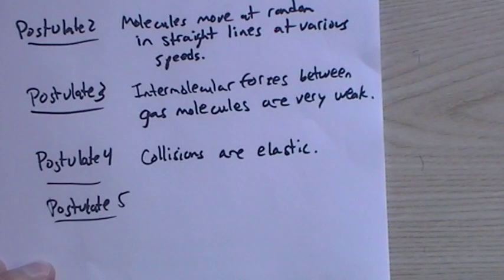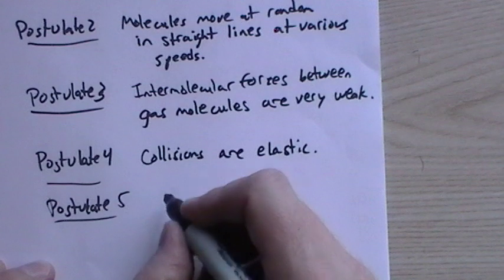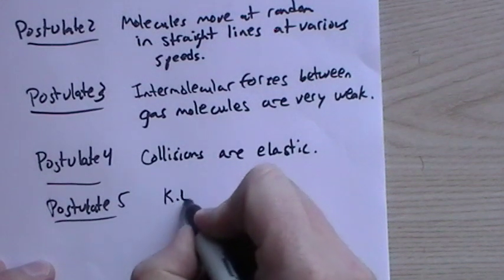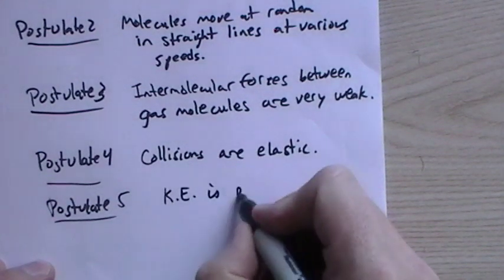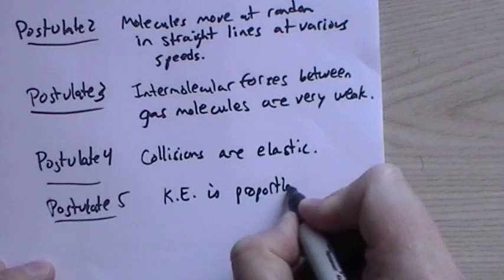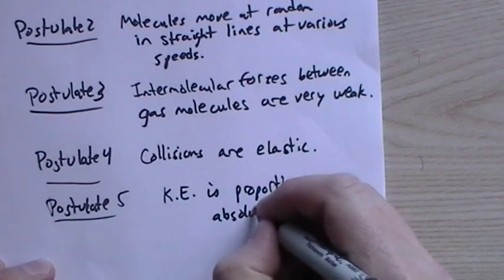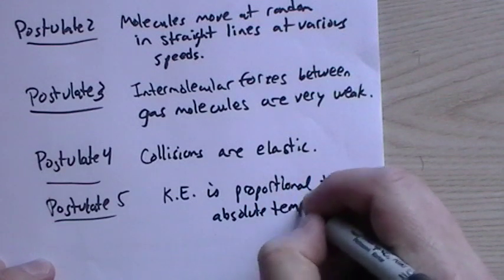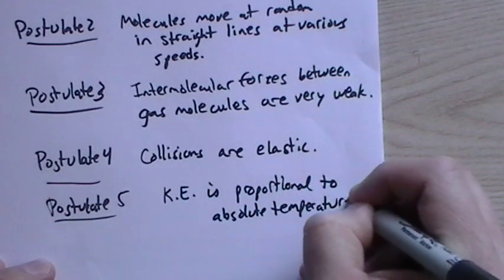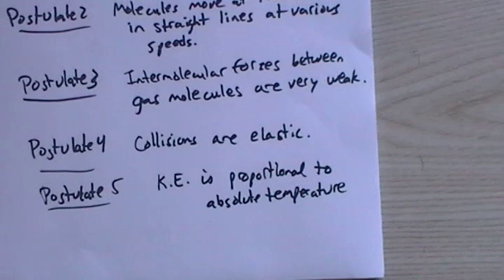Postulate 5: the average kinetic energy of a molecule is proportional to the absolute temperature. So kinetic energy is proportional to absolute temperature. Absolute, so we're talking about the Kelvin temperature scale. So as the temperature goes up, the kinetic energy goes up. So the higher the temperature, the faster the molecules move.